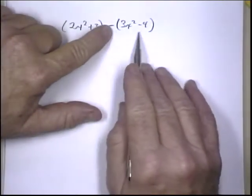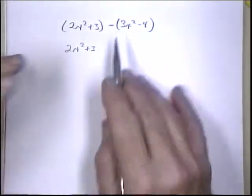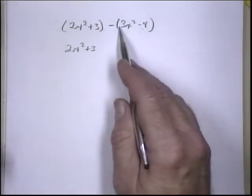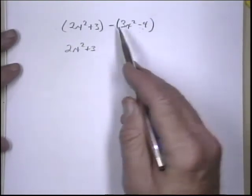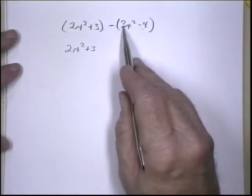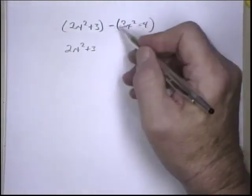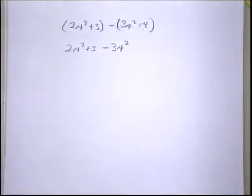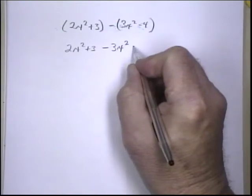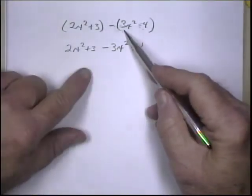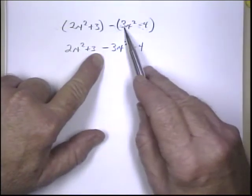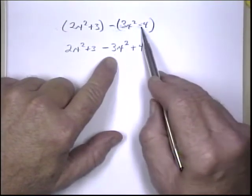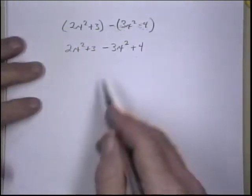This minus means we're multiplying everything here by a minus 1. All that does is change the sign. Once you get the hang of this, you won't even think of multiplying — you'll see you have a minus up here, remove the parentheses, and just change the sign of every term in the parentheses. If you multiply minus 1 times minus 4, you get a positive 4. I've removed the parentheses and changed the sign of every term: this was plus 3x², now it's minus 3x². This was minus 4, now it's plus 4.